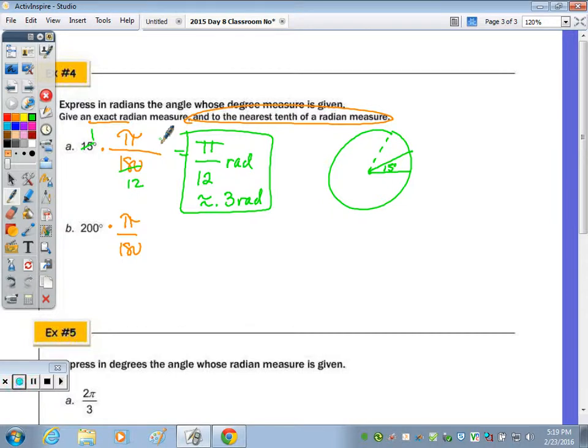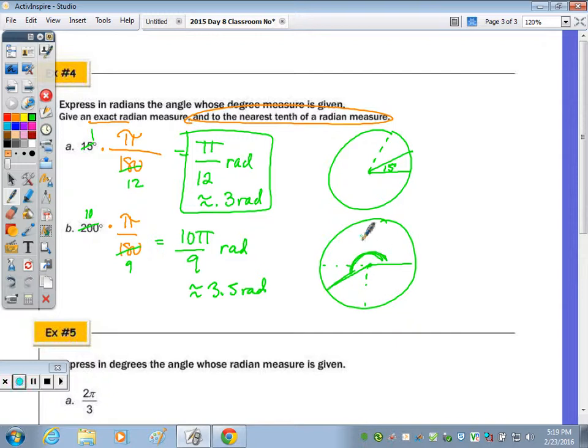Well, let's cross-cancel here. 20 goes in there 10 times, 20 goes in there 9 times, so we end up with 10 pi over 9, which is approximately 3.5 radians. So again, drawing a circle, 180 was here, 270's here, so that's about there. Here's 200 degrees, or about 3.5 radians.